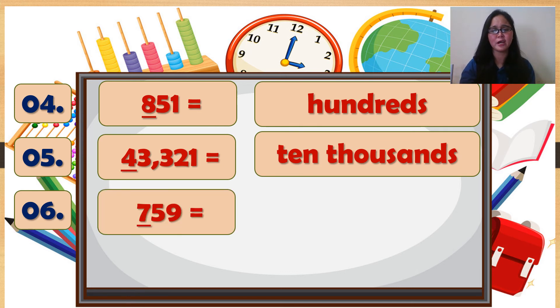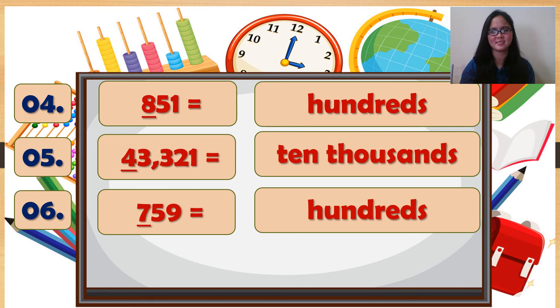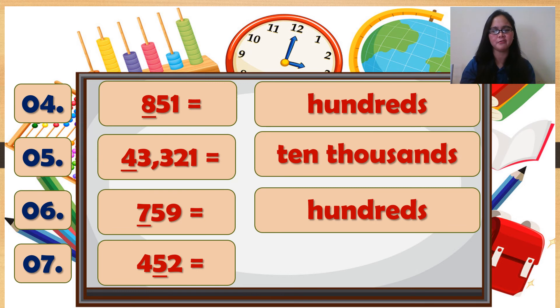Number 6: 759. 7 is... hundreds. Number 7: 452. 5 is... it's tens.